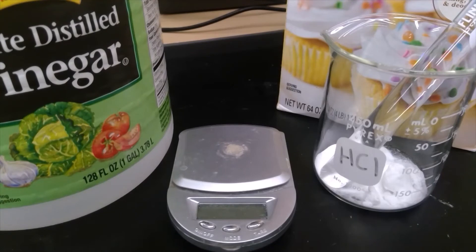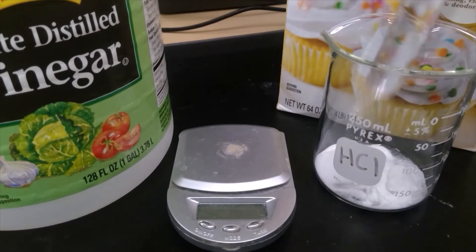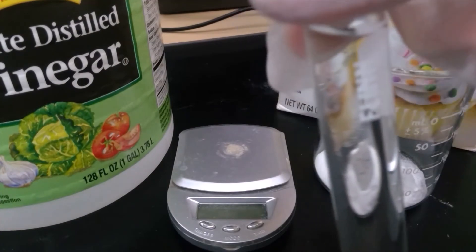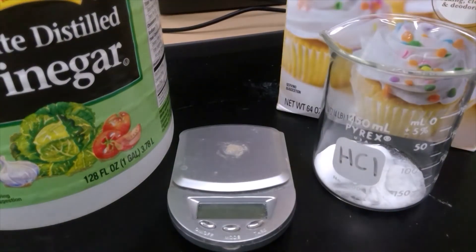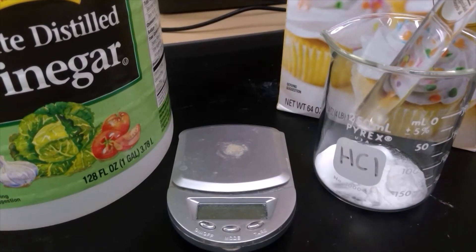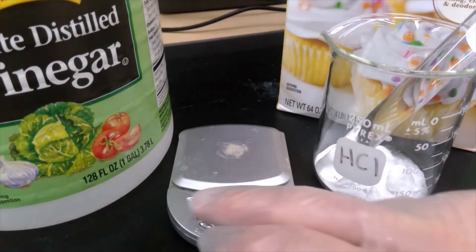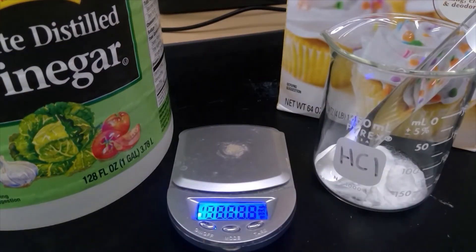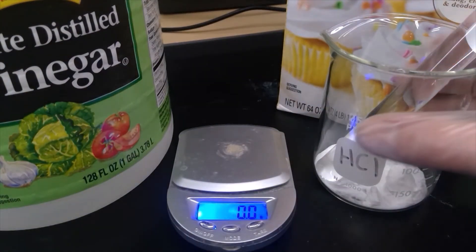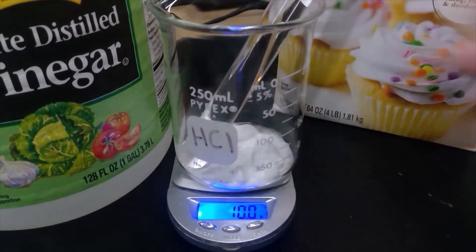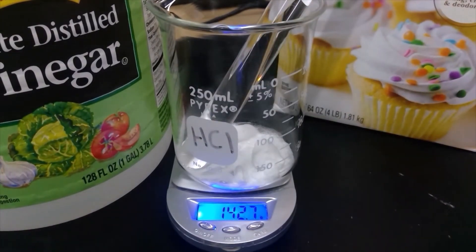Measurement number six: baking soda and vinegar. I have the white baking soda powder in this beaker, and this liquid is vinegar in a test tube. What observations can you make about both of these substances? Let's get the mass before. 142.7 grams.